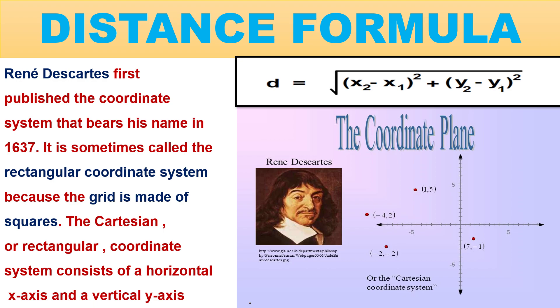The Cartesian or Rectangular Coordinate System consists of a horizontal x-axis and a vertical y-axis. Now you see in the figure, this is your x-axis and this is your y-axis.